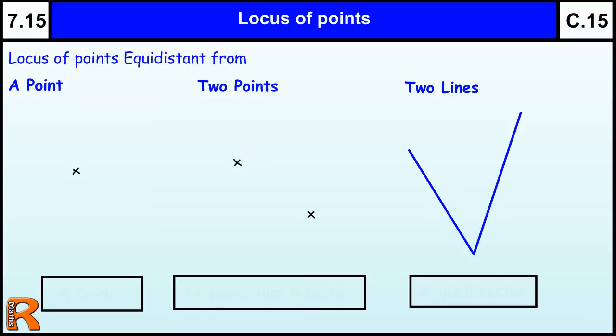Locus of Points, Level 7, Grade C Topic. Now locus of points that are equidistant from a point, two points, two lines. In mathematics, locus means a set of points that satisfy a condition, so the condition is that they are equidistant from these three things.